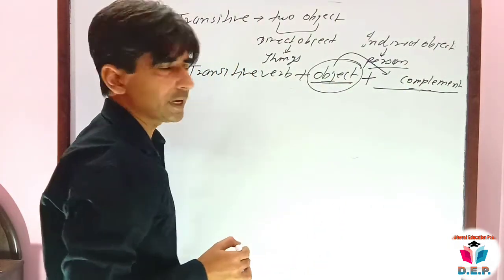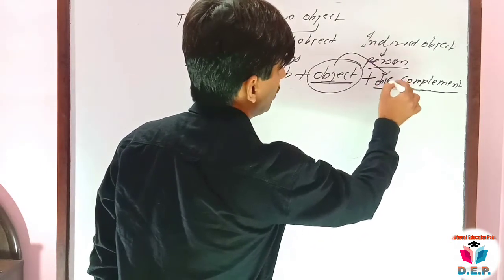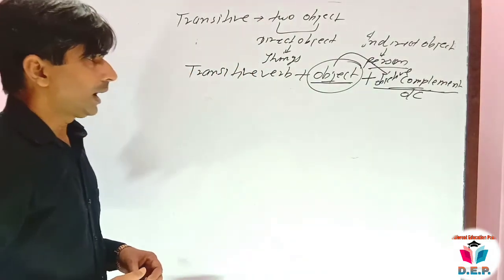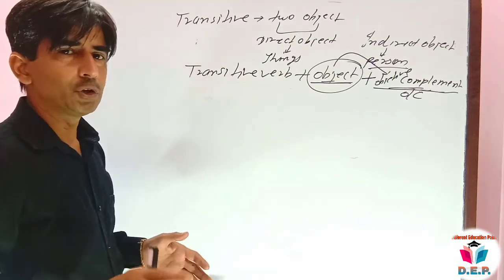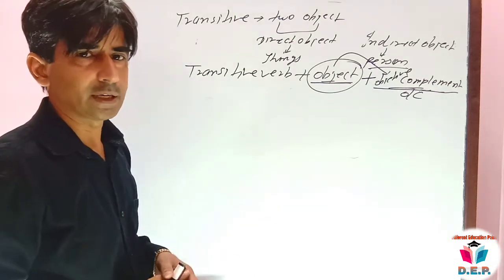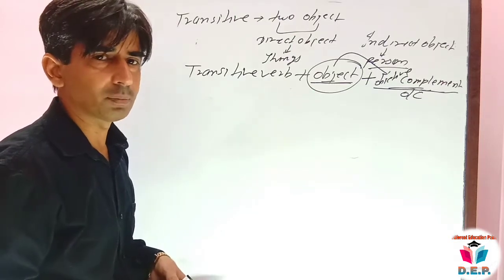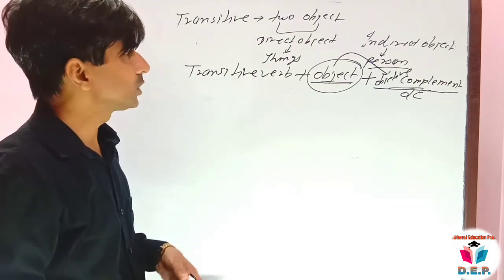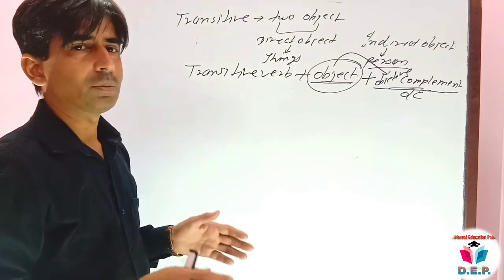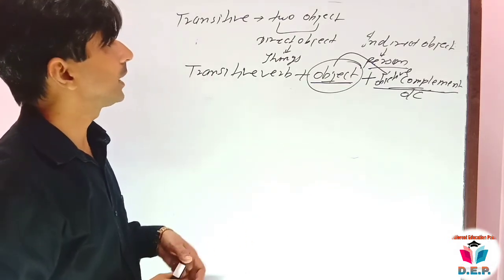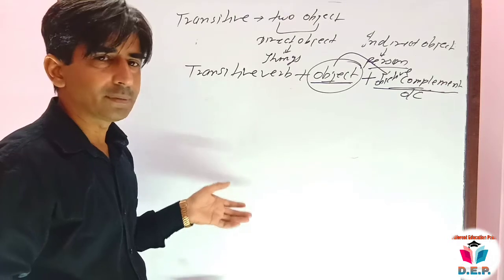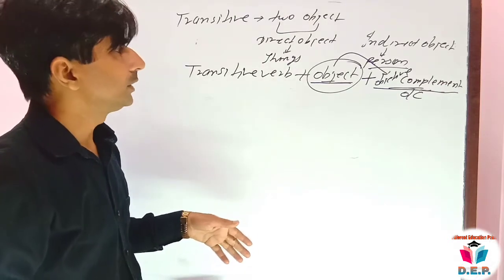What is Complement? It is the objective complement, so here we will say objective complement — in short, you can say OC. In the previous video, we discussed that if there is a transitive verb, there are two objects. Verbs like give, tell, ask, offer are transitive verbs that take two objects — direct and indirect. When we have passive voice, we could convert those into passive.